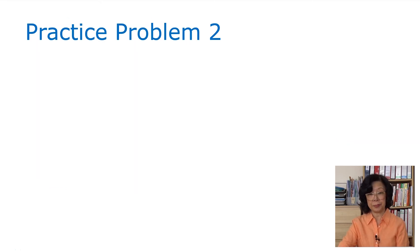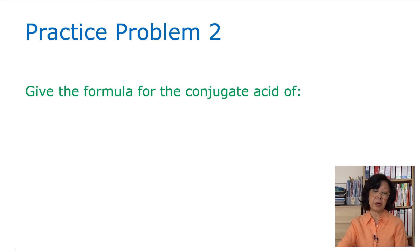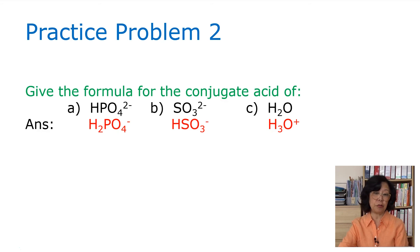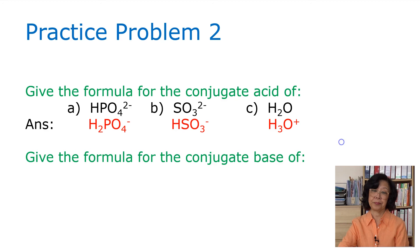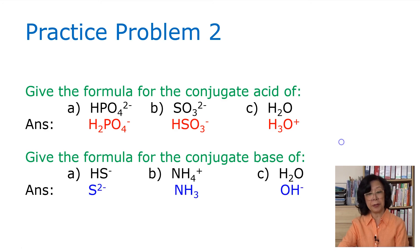Practice problem number two: give the formula for the conjugate acid of the following species. As you know, the conjugate acid would acquire a proton, so afterwards we have H2PO4-, HSO3-, and H3O+. Make sure that you account for the charges. Once you add the proton, the charge of the ion is reduced by one, by negative one. Give the formula for the conjugate base of HS-, NH4+, and water. When we talk about conjugate base, we're removing the proton, so we have now sulfide 2- ion, ammonia, and hydroxide ions formed.